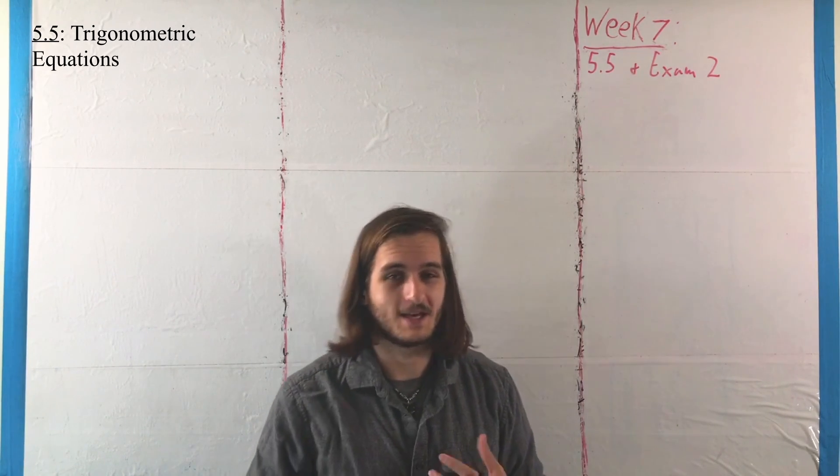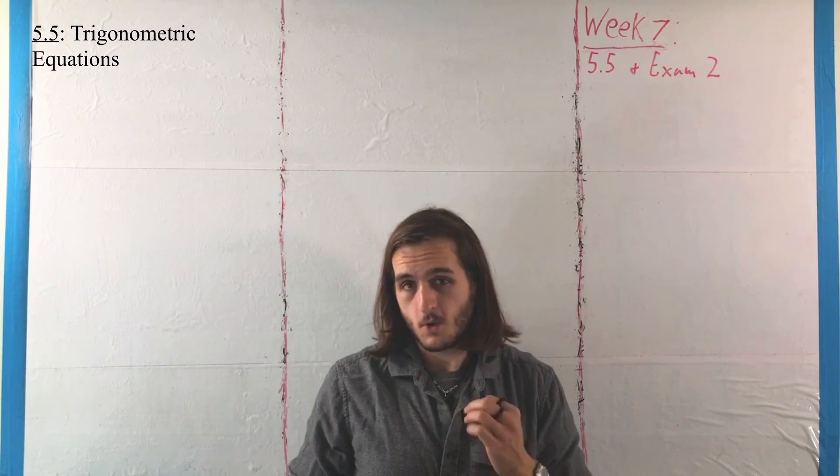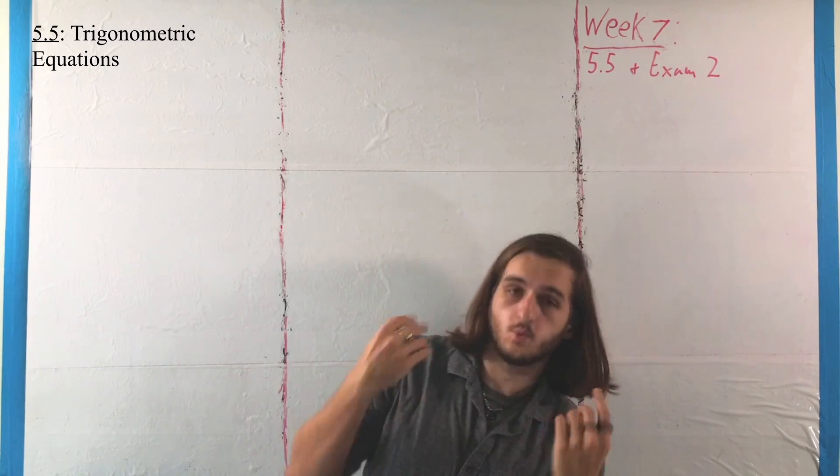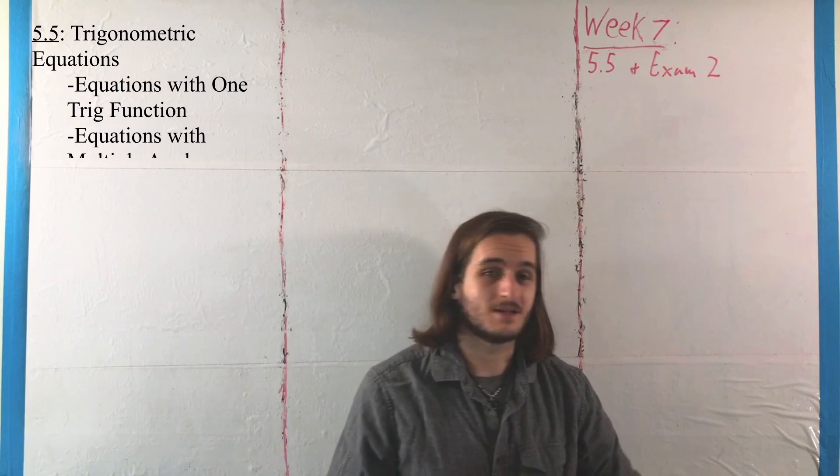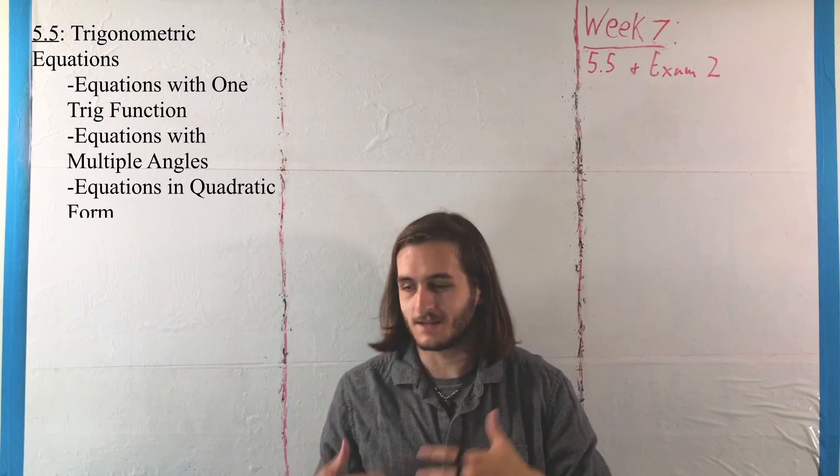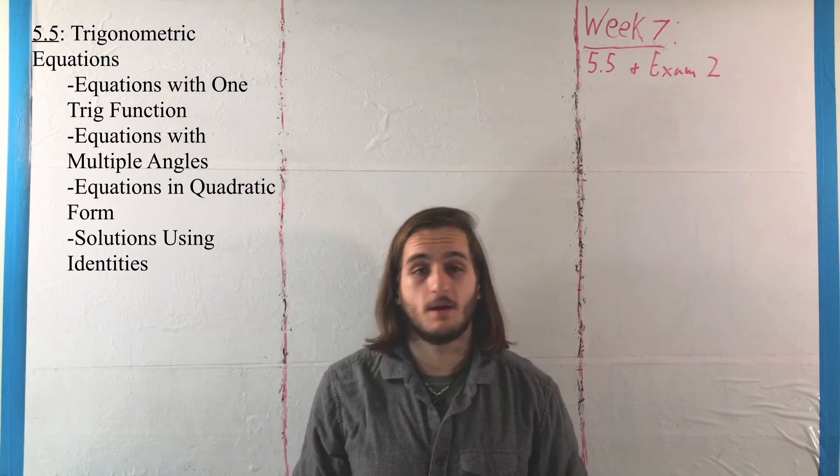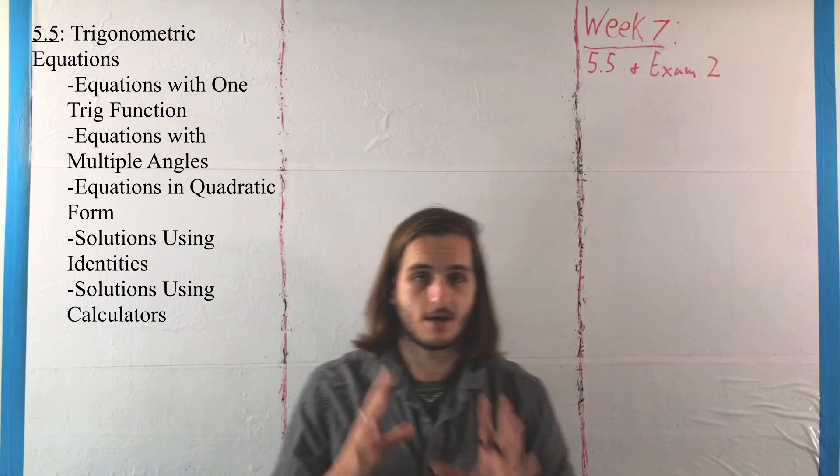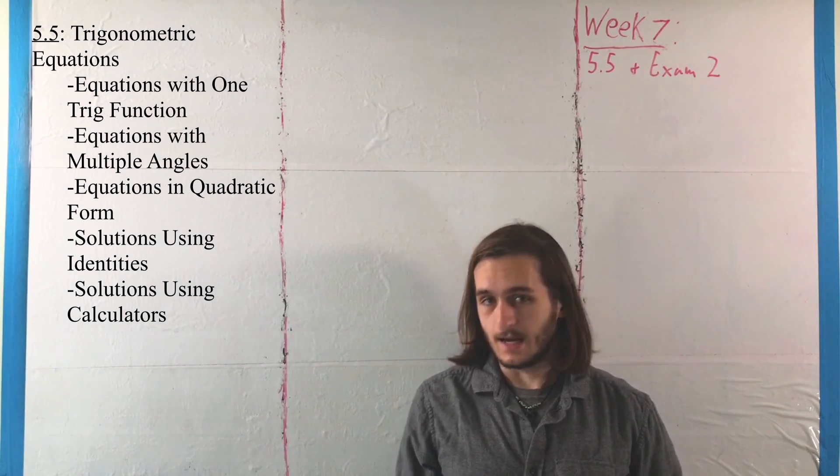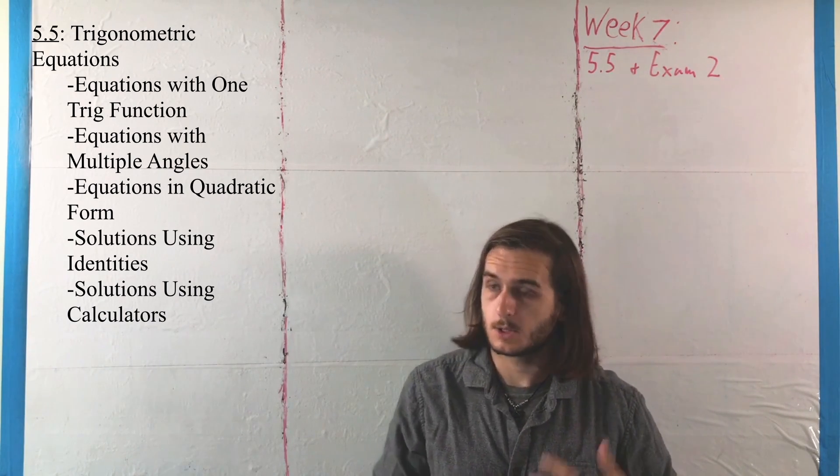It's one of the more computationally dense sections of this entire class, where we're looking at things in terms of having just one trig function or things with multiple angles or things in special forms. You have to use identities and factoring and even things where you might have to use a calculator to get your answer because these are not going to be simple all the time.